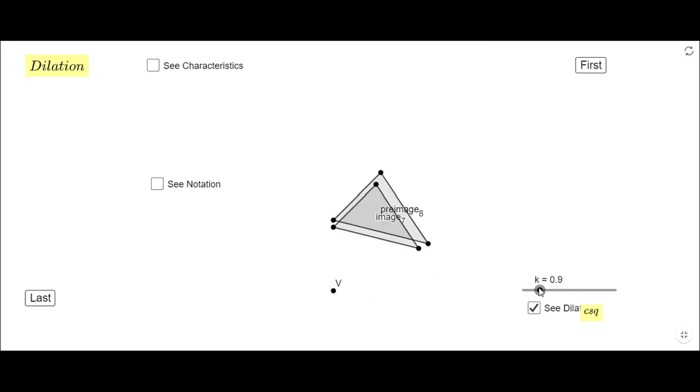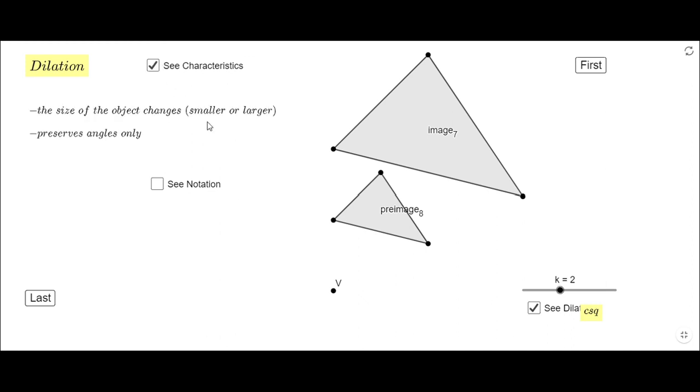See characteristics here: the size of the object changes. You notice it's smaller or larger. It preserves only the angles. The length obviously will change. And you can see some notation like this: dilation, center of dilation V, scale factor K, or a verbal way. And that's pretty much today about transformation.